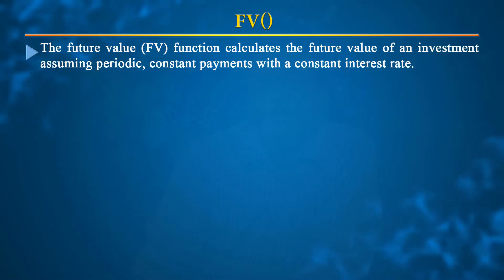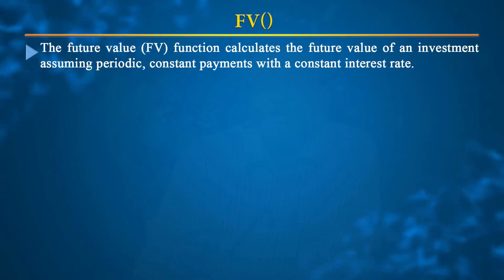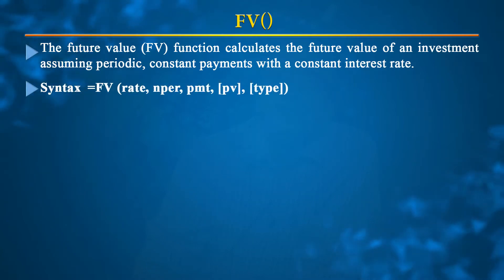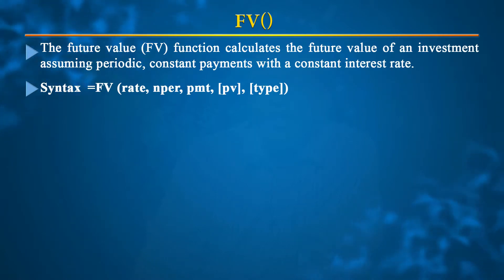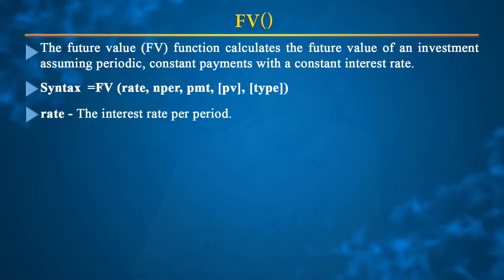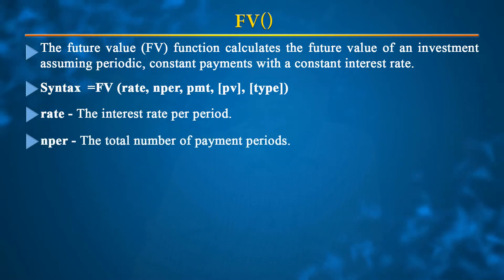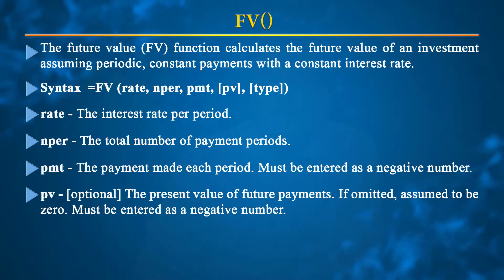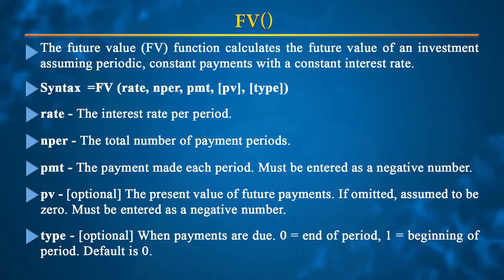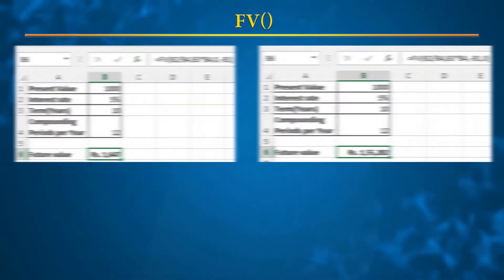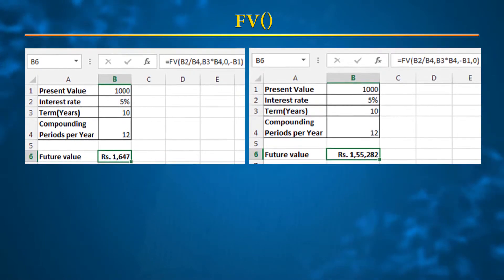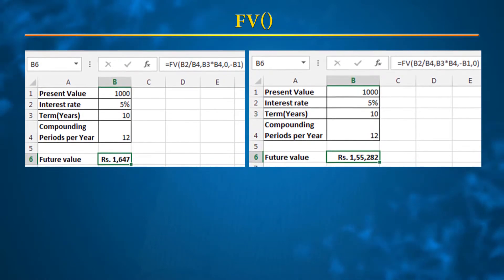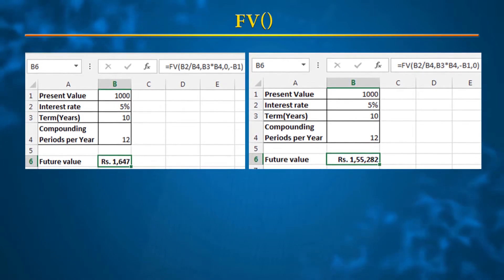The FV function calculates the future value of an investment assuming periodic constant payments with a constant interest rate. The syntax is =FV(rate, NPER, PMT, [PV], [type]). Rate represents the interest rate per period, NPER is the total number of payment periods, PMT is the payment made in each period and must be entered as a negative number because you are paying it. PV is the present value of future payments and type relates to when payments are due: 0 for end of period, 1 for beginning, with 0 as the default.